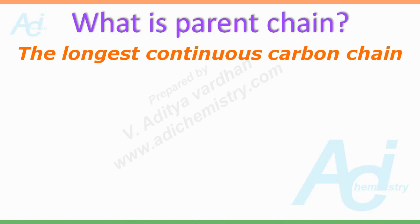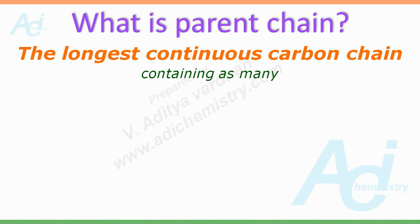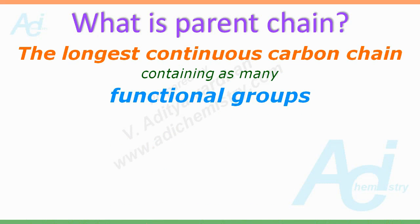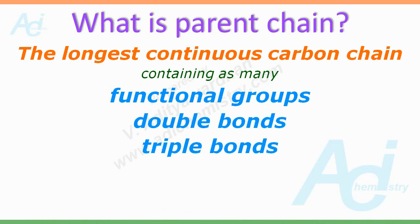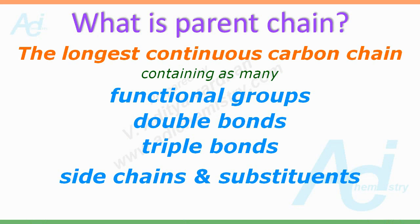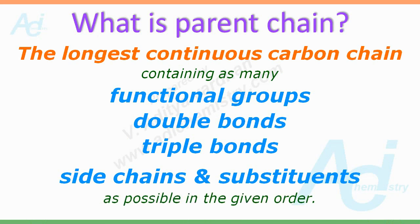What is a parent chain? It is the longest continuous carbon chain containing as many functional groups, double bonds, triple bonds, side chains, and substituents as possible in the given order. That means the parent chain must contain as many carbon atoms as possible which are arranged continuously.